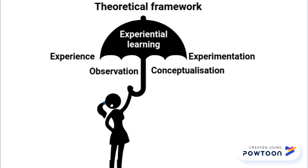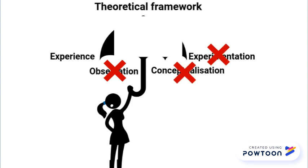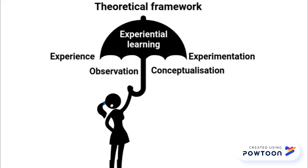Now, you would know that the spikes of an umbrella keep it open. So if one of the spikes in your theoretical framework umbrella was, for example, missing, your umbrella would not work very well. In fact, if you missed several spikes your umbrella would collapse entirely. This is why it is important to have a really comprehensive theoretical framework — it will help you collect all the data you need to answer your research questions.